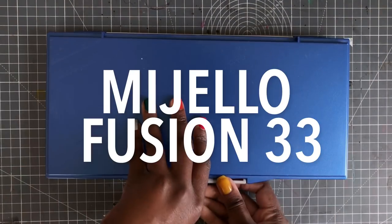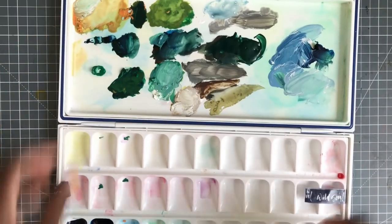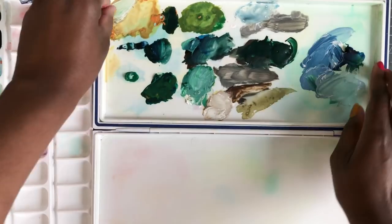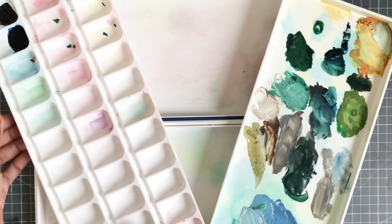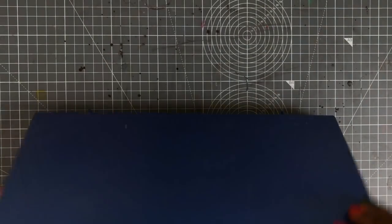Then I got as a present the Mijello Fusion 33 Well palette which is humongous. Actually I totally forgot how much mixing space I have in this and I'm definitely going to be using that now. It has 33 wells that come out, space underneath that, and another pan that comes out which is madness.